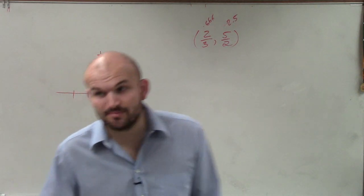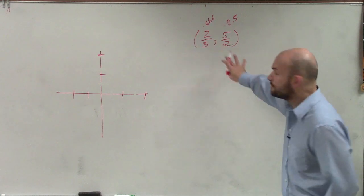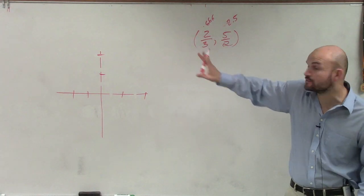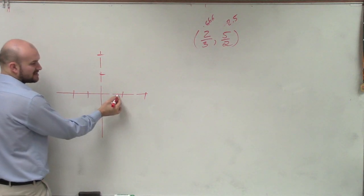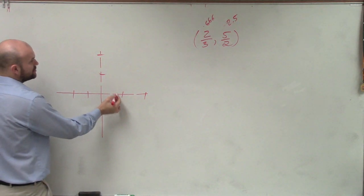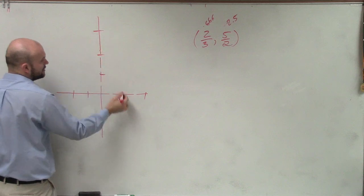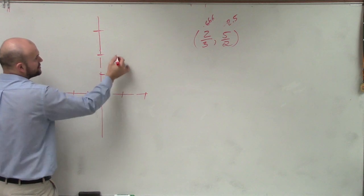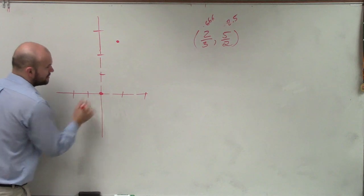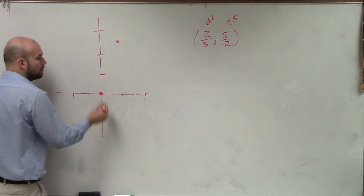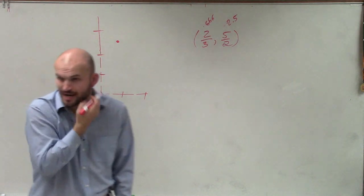So if I was going to go and plot this point, because remember, whenever you get a point, it doesn't matter if it's fractions or whatever. 2 thirds, that's like 0.6666 repeating. So that's like about right there. And then I got to go to 2.5. So let's go up one more. So 0.66 and then 1, 2, 2.5. So we went from the origin. There's our point.